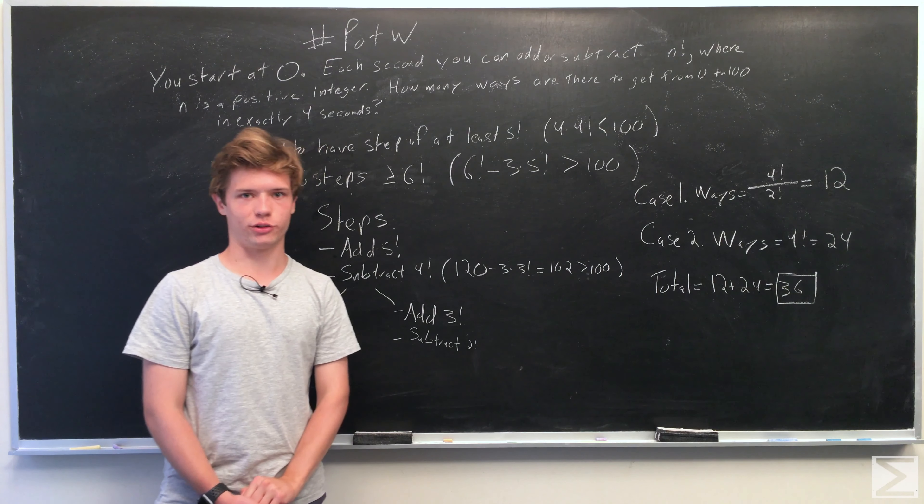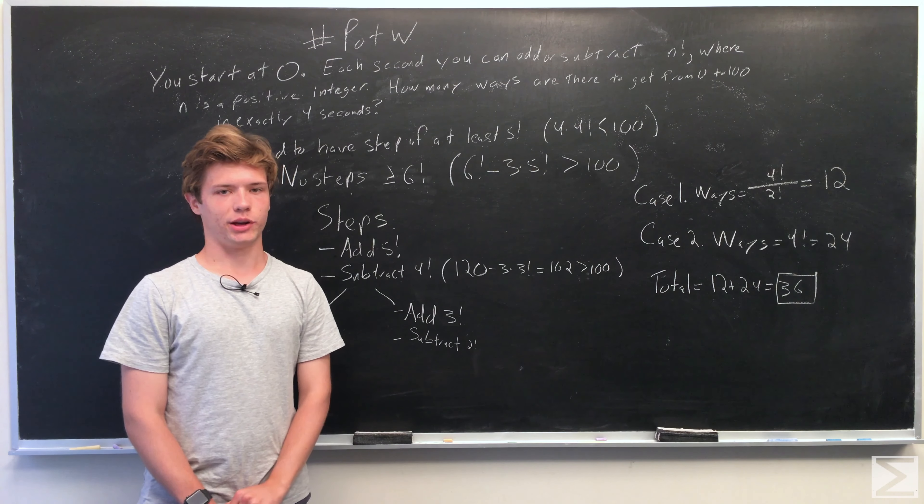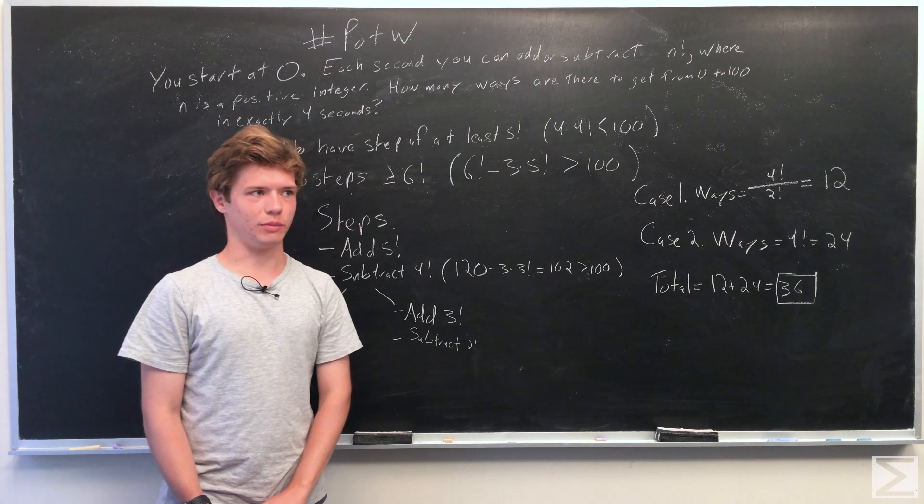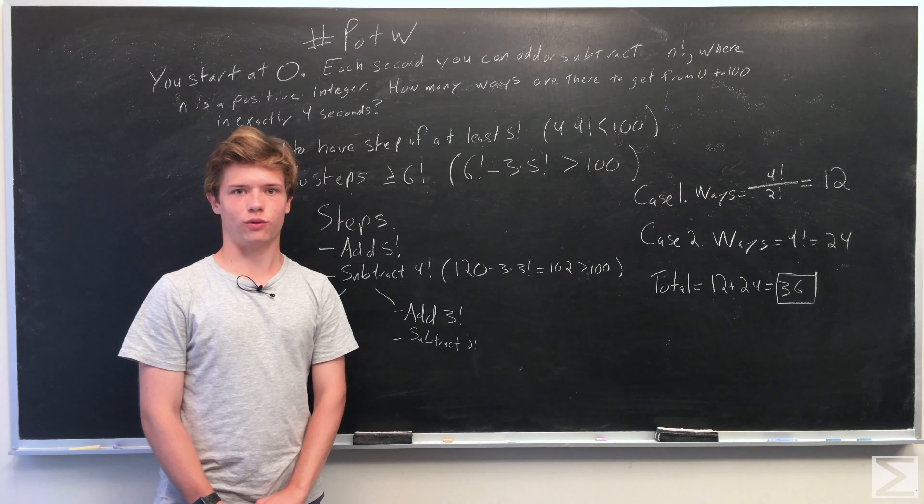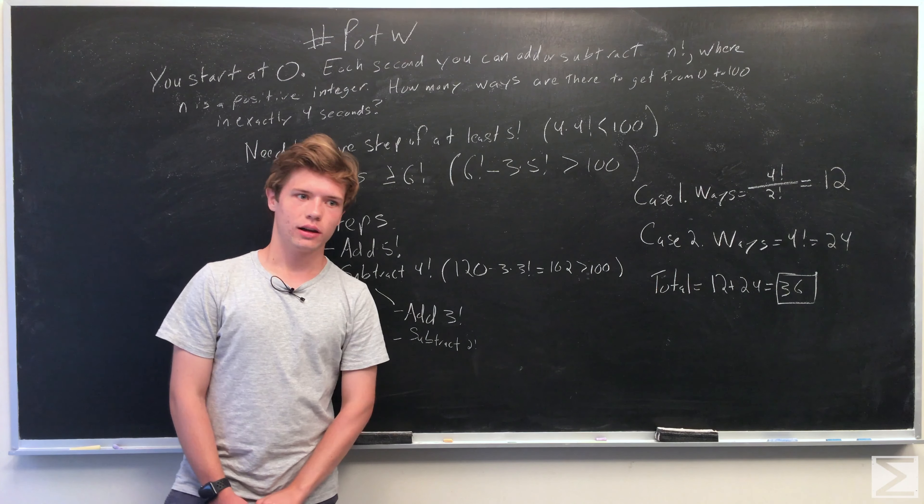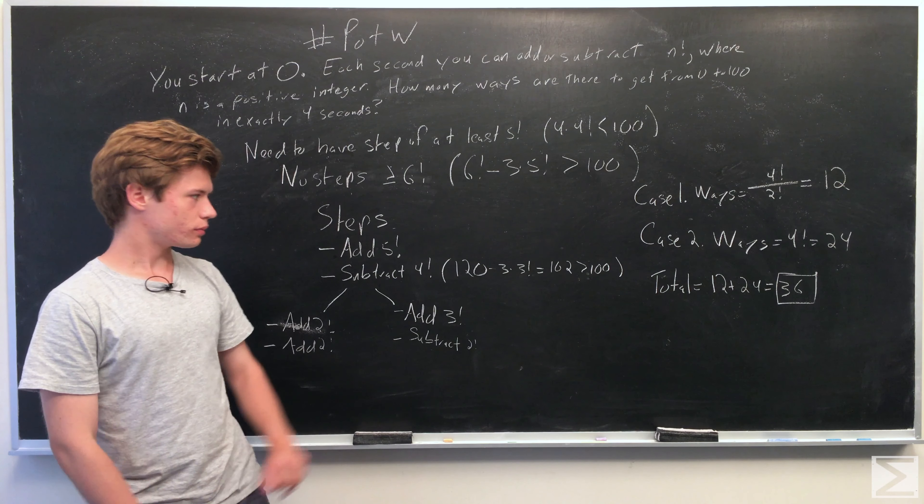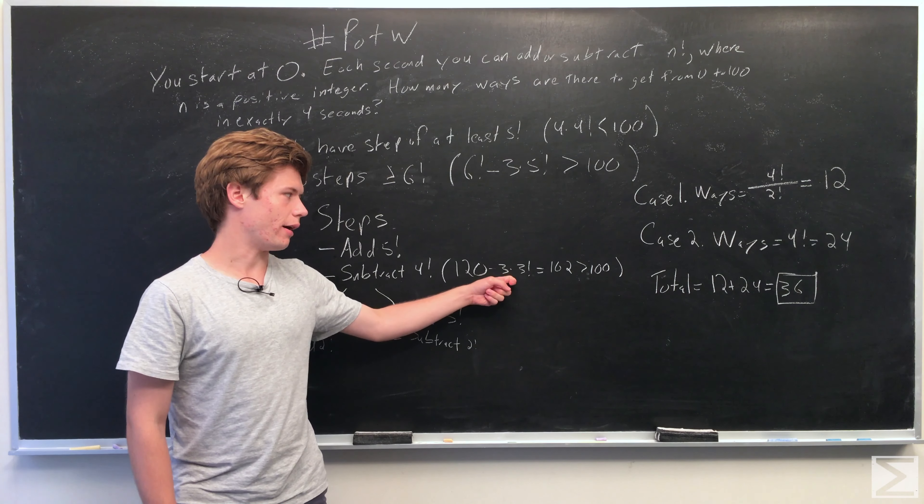So 5 factorial equals 120, and we know that we have to subtract 4 factorial from this total because 3 factorial equals 6...